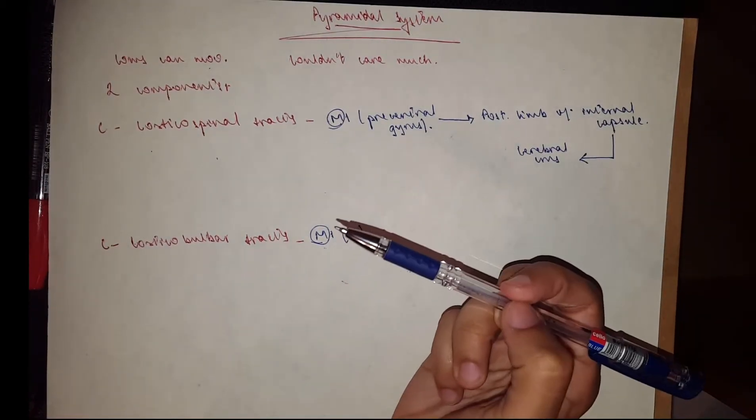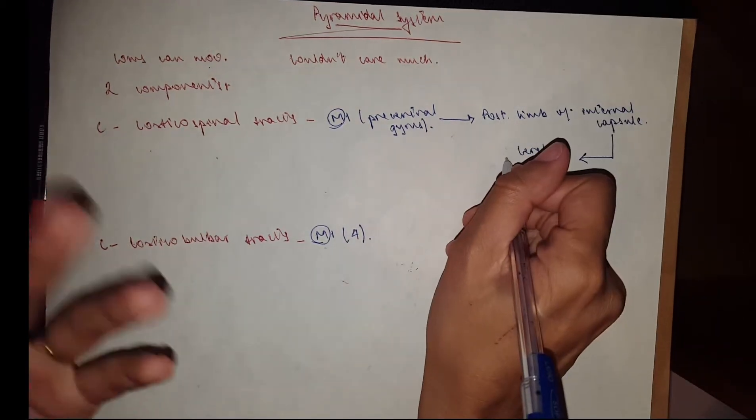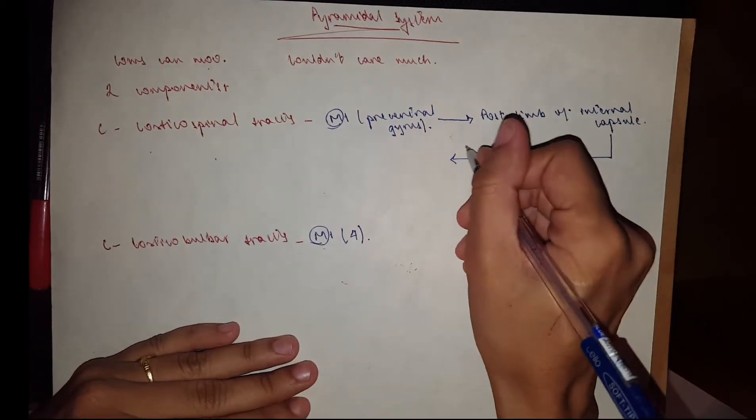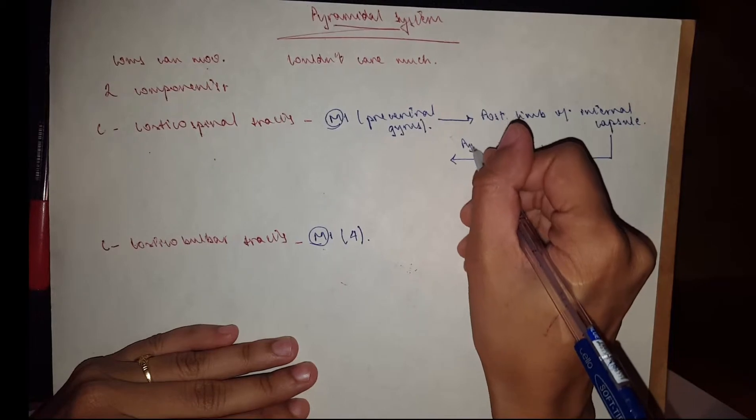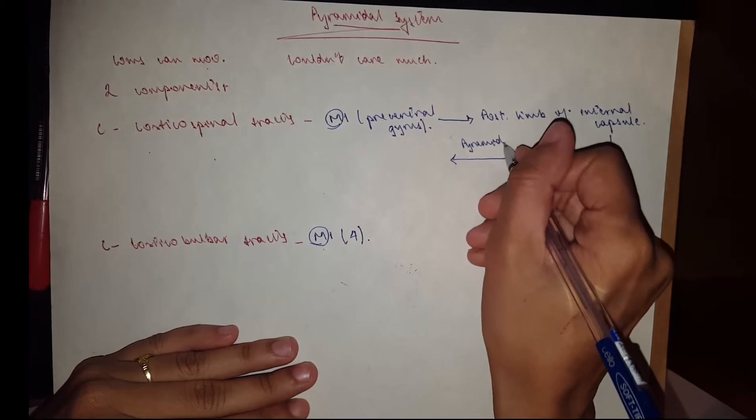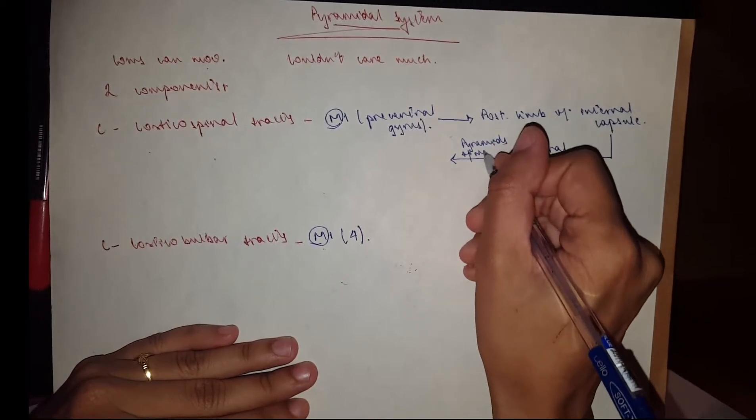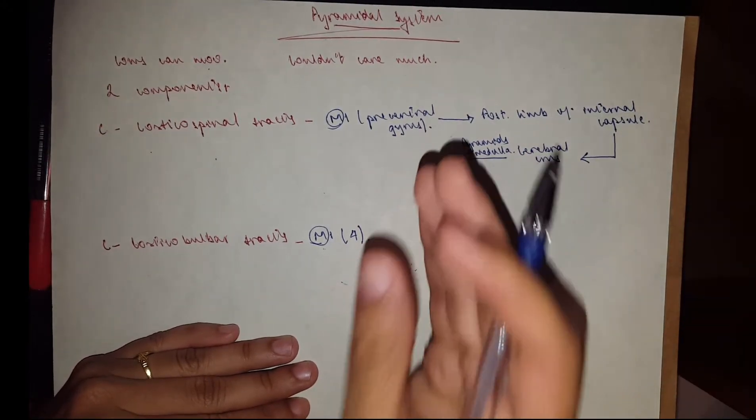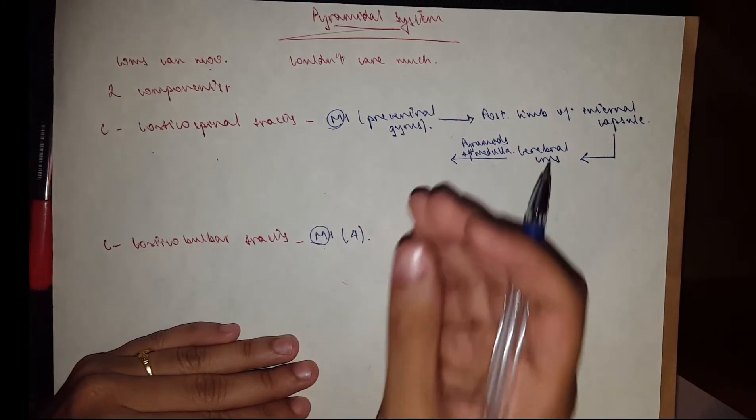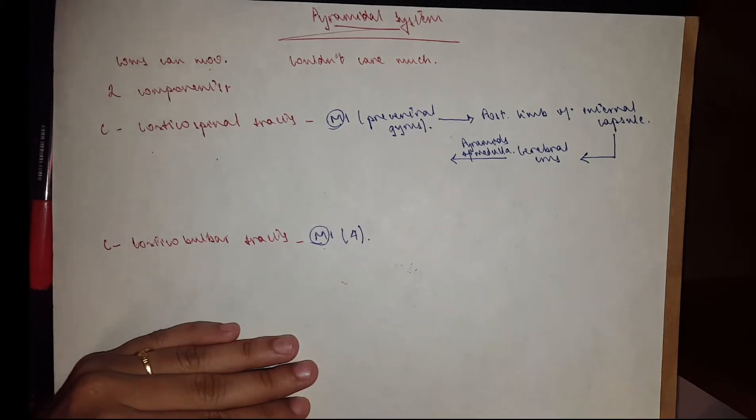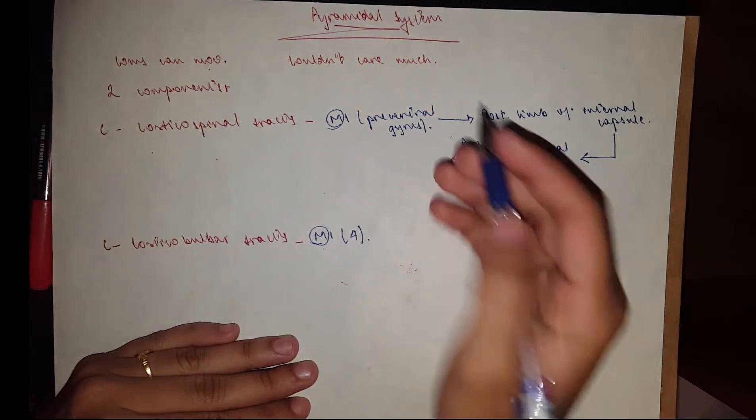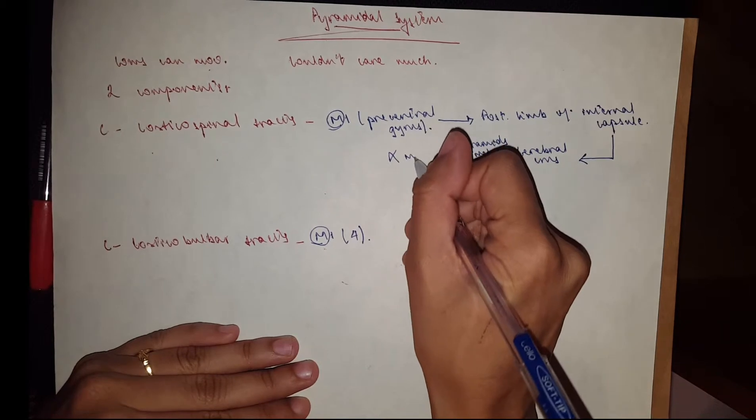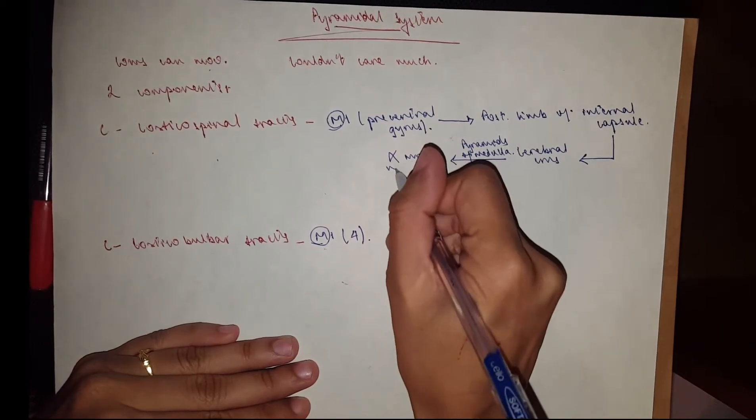The pyramidal system is called pyramidal because it passes through the pyramids of the medulla. As it passes at the pyramids, it goes to the spinal cord white matter and lands in the ventral rhema. The ventral rhema is supposed to be motor, so it synapses with the alpha motor neurons in the anterior grey horn of the spinal cord.